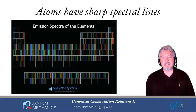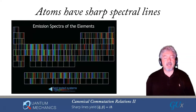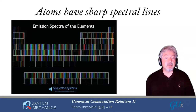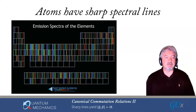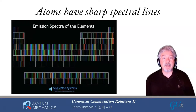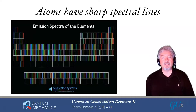Now we're going to talk about atoms. When we look at atomic spectra, they have very sharp lines. This is actually a periodic table of the spectra of atoms — you can see the spectra vary a lot from one atom to another, but we always see sharp lines. That's really the key: spectra always come with sharp lines.